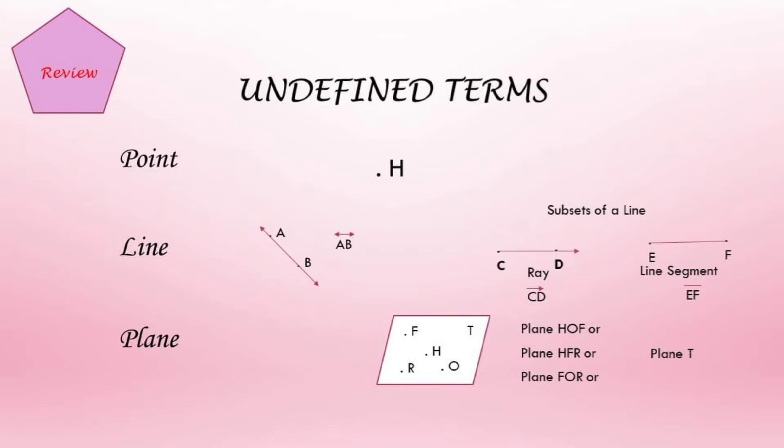And then we have the subsets of a line. The first one is a ray. A ray has a beginning and extends infinitely in one direction. And then we have the line segment. It has a beginning and an end.